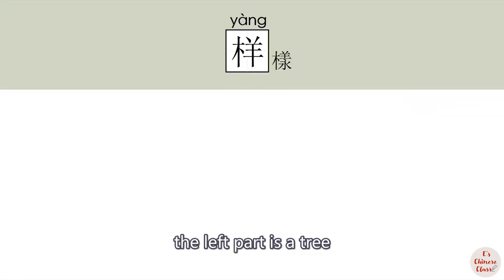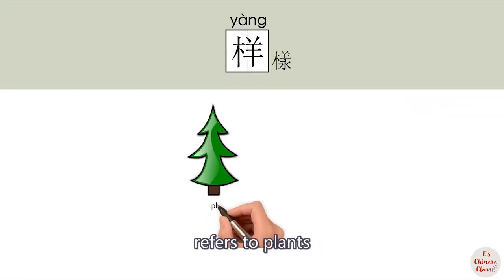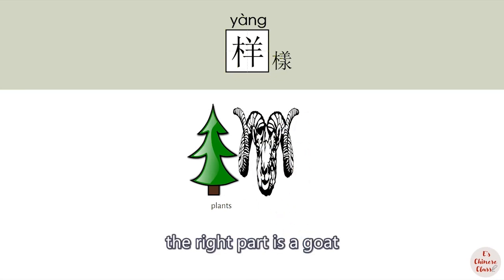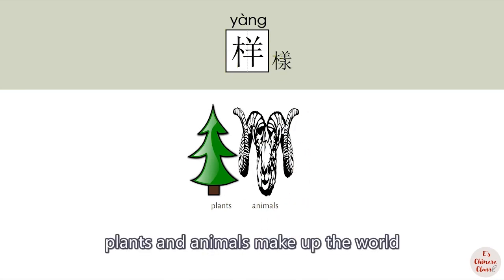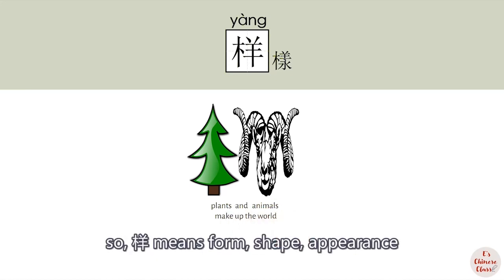样. The left part is a tree, refers to plants. The right part is a goat, refers to animals. Plants and animals make up the world. So 样 means form, shape, appearance.